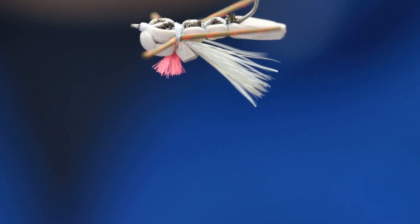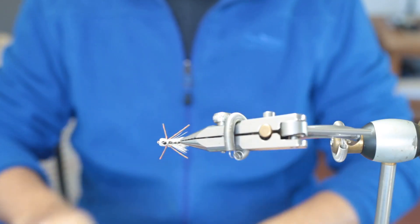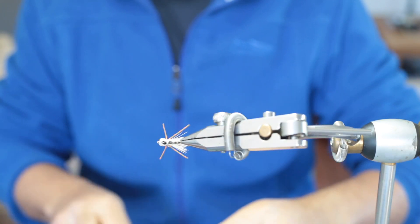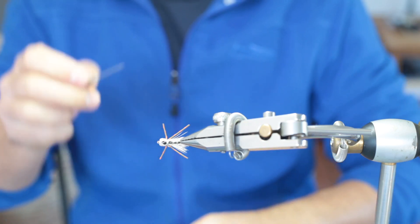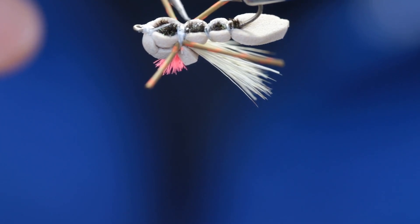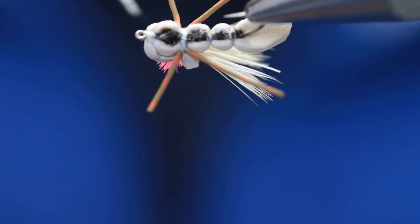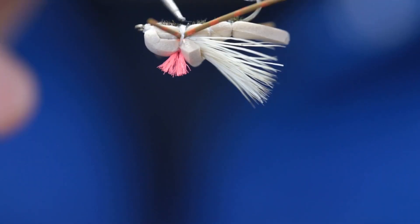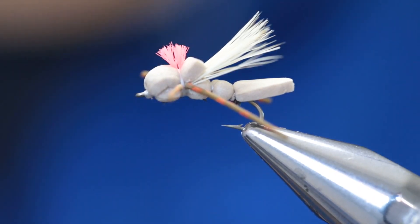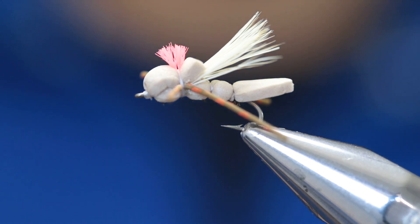So now I'm going to twist the fly on its side for you to see. Open your head cement, take some head cement, put some on my bodkin, and just drop some on that segment right there and on the head. And that's how quick and how easy it is to tie a hopper.